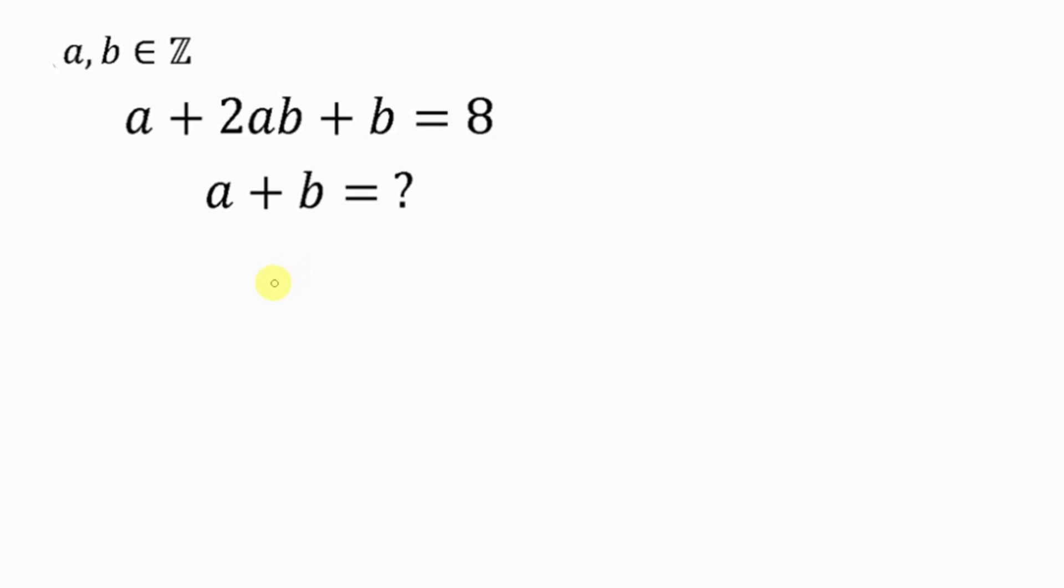Well, our first step towards solving this question will be to factorize the left hand side. But in order for us to do that, we're going to be multiplying both sides of the equation by 2 and also adding 1 to both sides. So, multiplying the left hand side by 2, we have 2A plus 4AB plus 2B. Remember, we need to add 1 plus 1. We do the same thing to the right hand side: multiply by 2 and add 1.